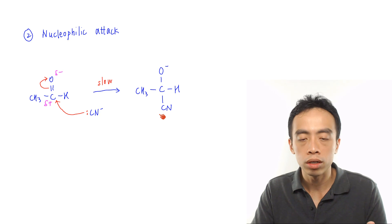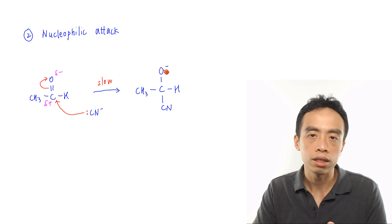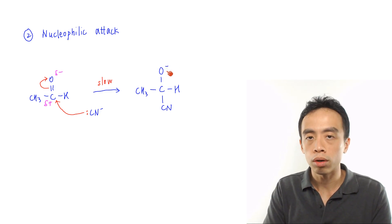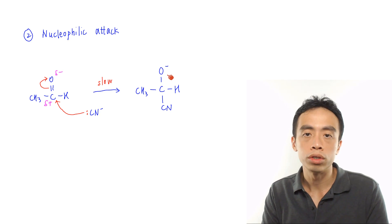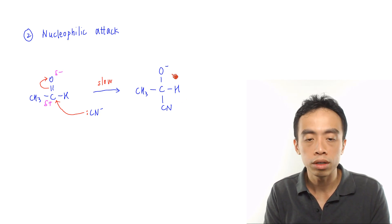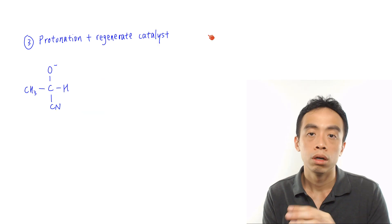The intermediate is not very stable because oxygen is negatively charged. That will prompt us to the next step, which is the protonation of this intermediate, and I regenerate the catalyst.